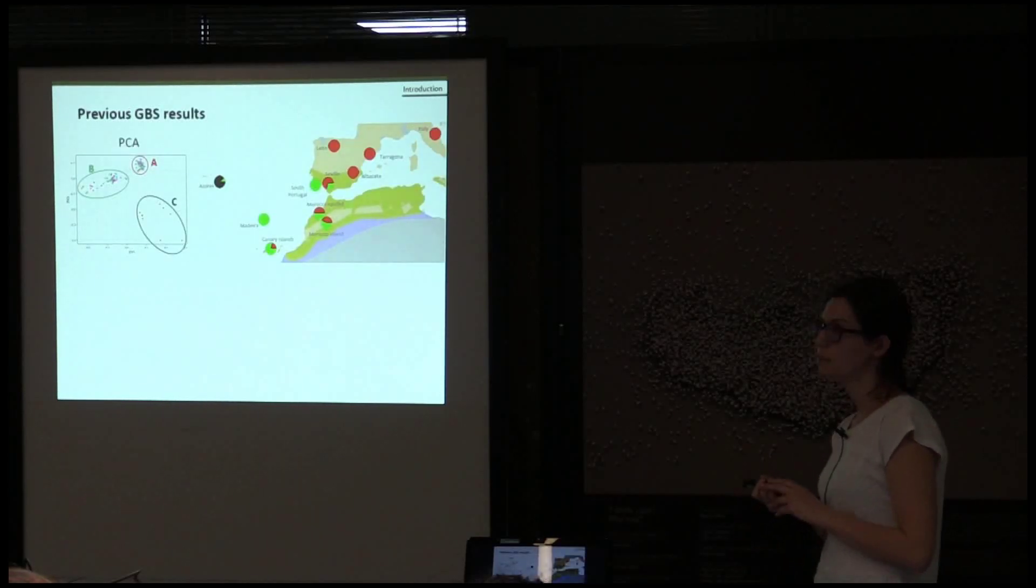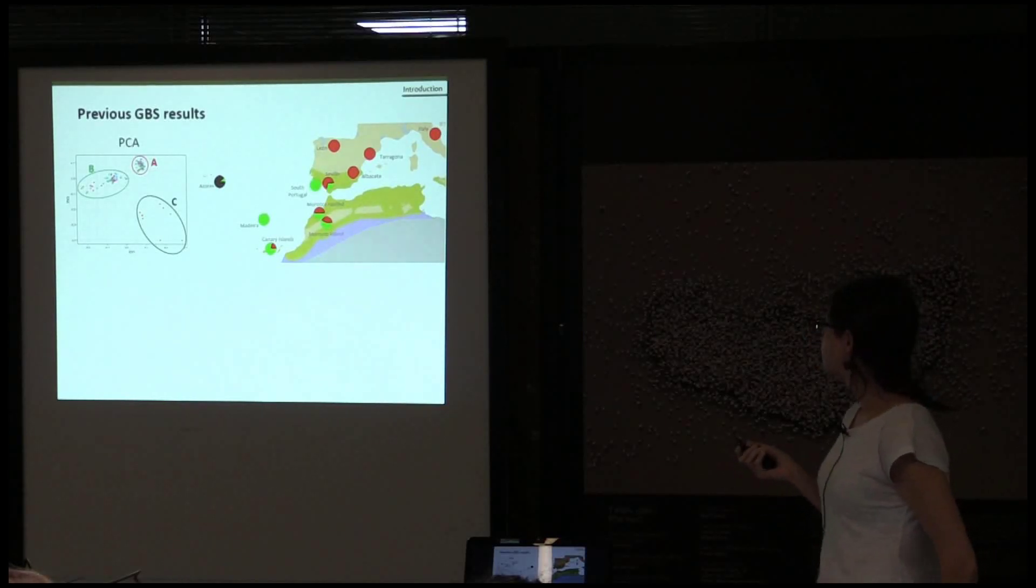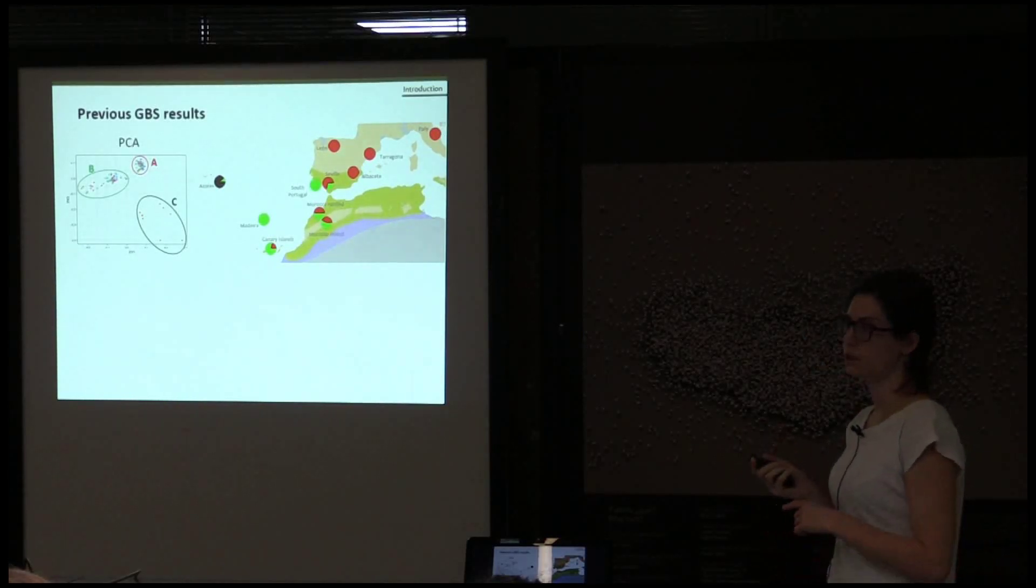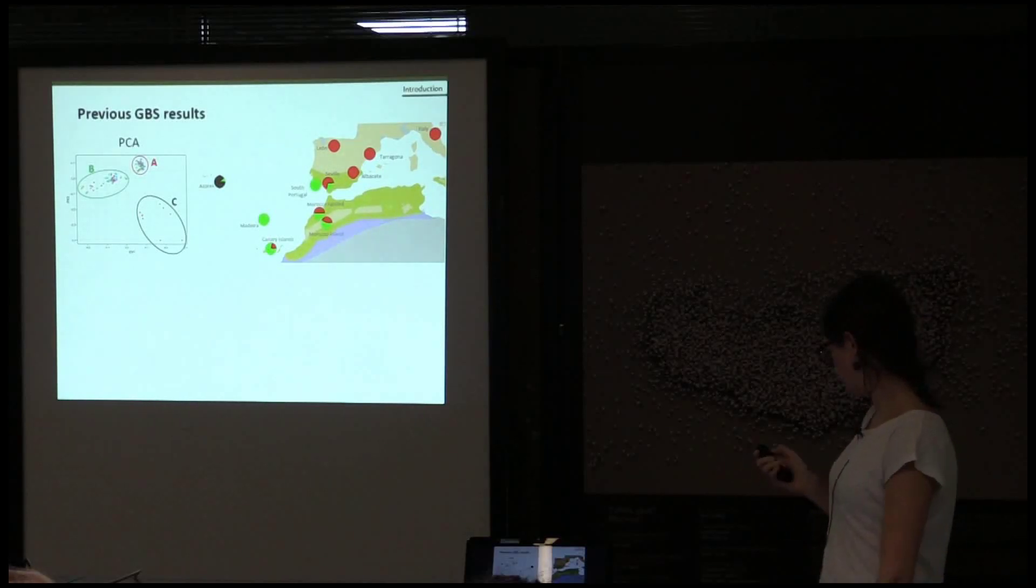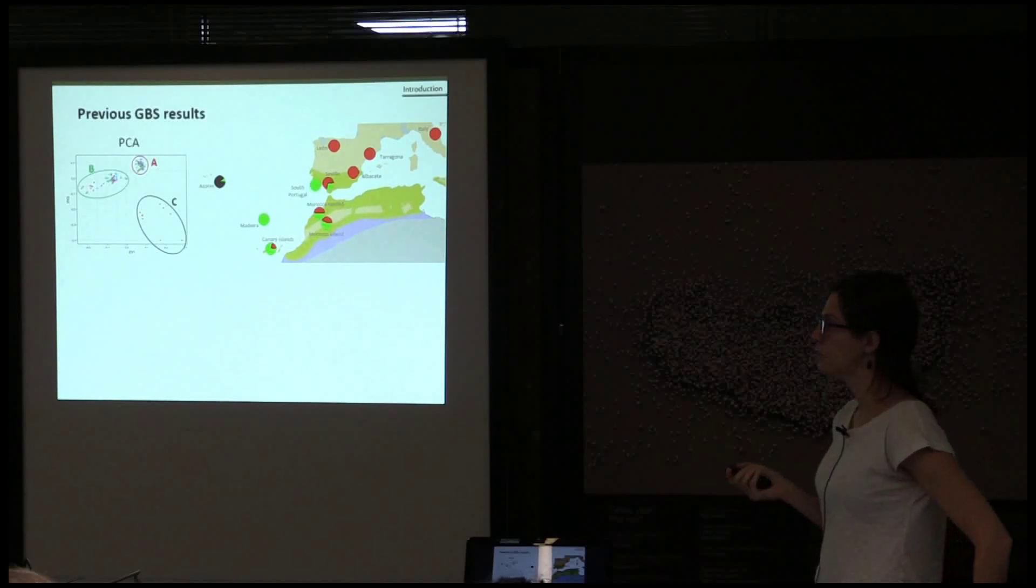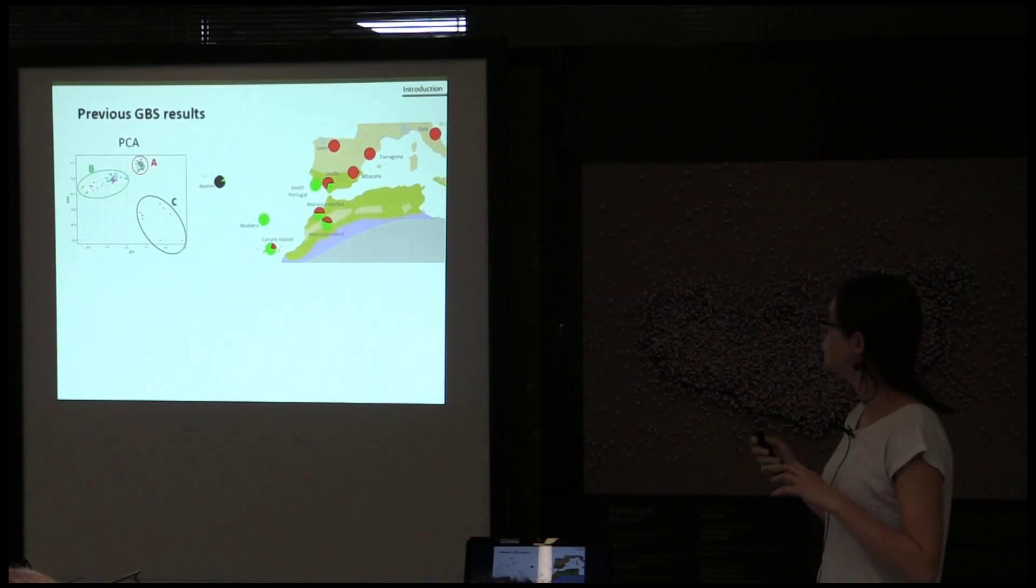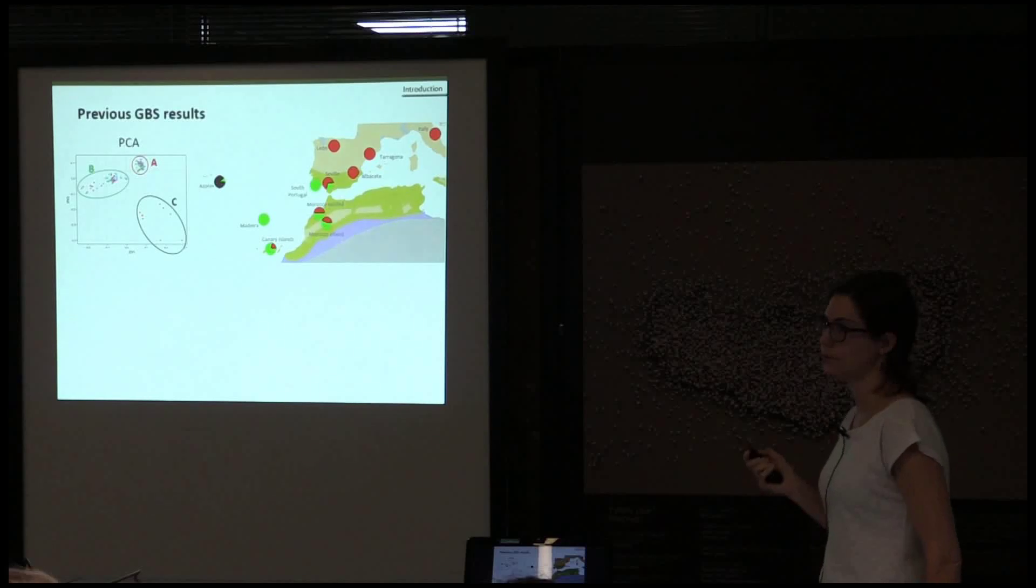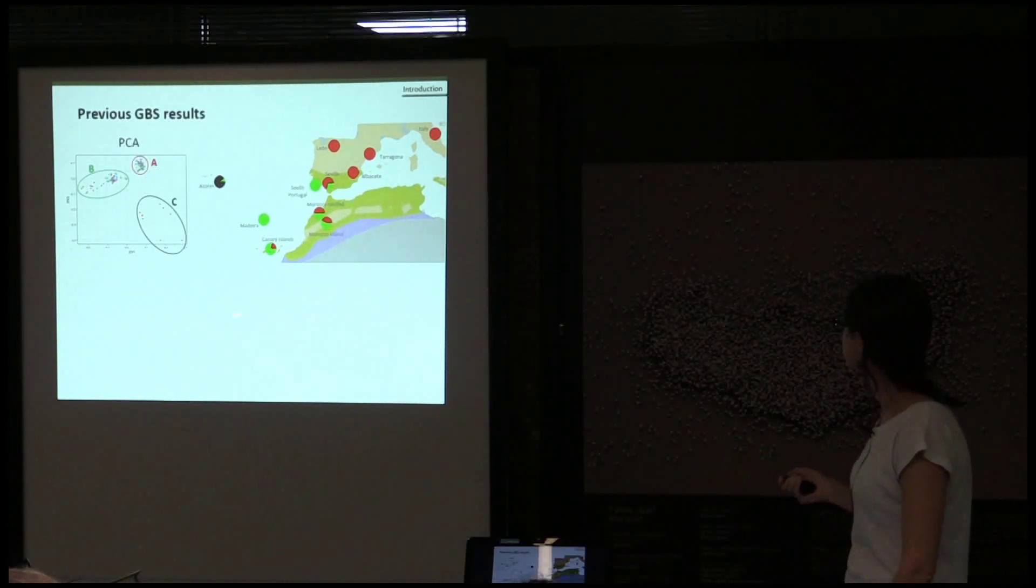In a previous unpublished project, we sequenced 95 samples with genotyping by sequencing from the region that I told you, and the PCA showed that they separated into three different clusters, as you can see here. This cluster, the C1, is exclusive to Azores, while the other two are present in all the distributions.